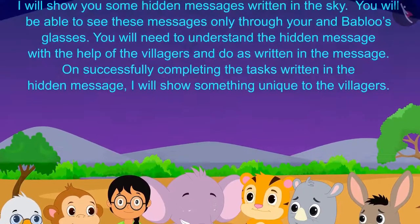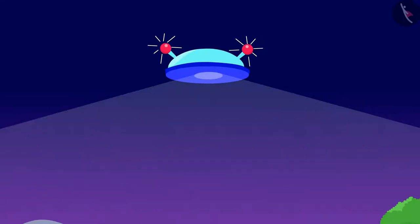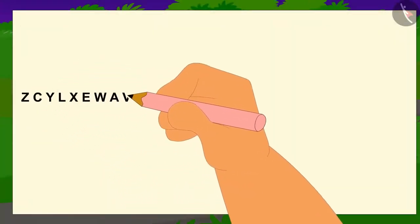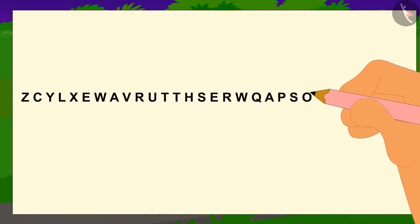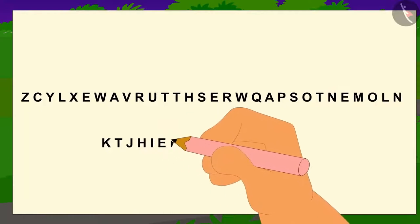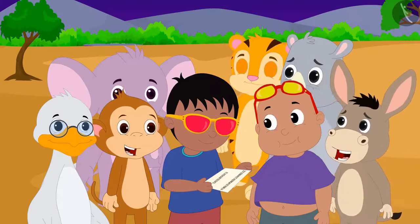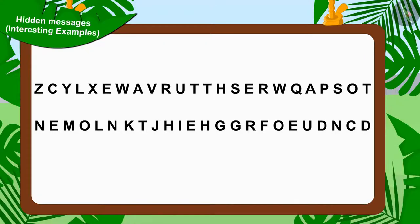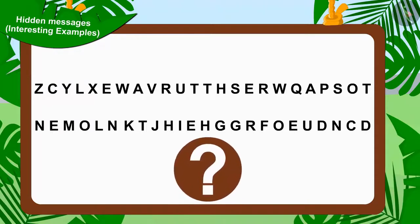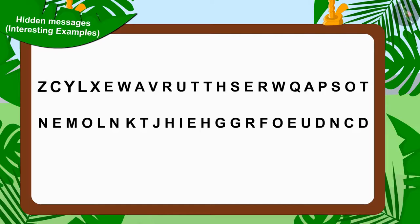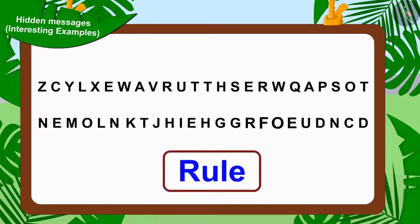After the first message was completed, it disappeared and a new hidden message appeared in its place. Raju wrote the first hidden message on a piece of paper and showed it to the villagers. All the villagers got together to solve that hidden message. If you wish to, you can stop the video and find the answer. Let us first find the rule in these alphabets.